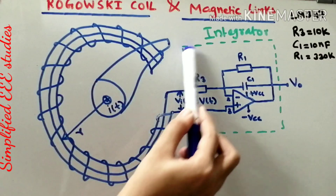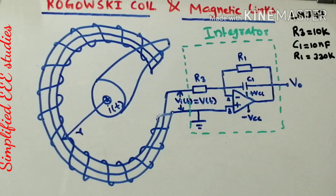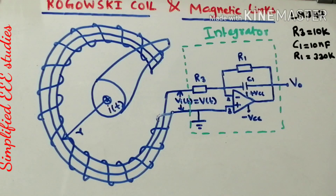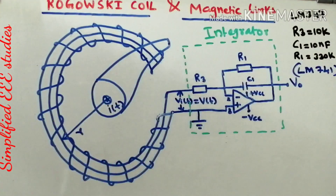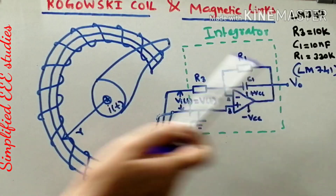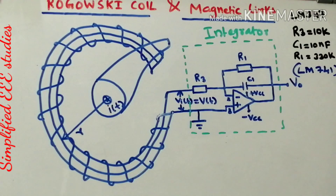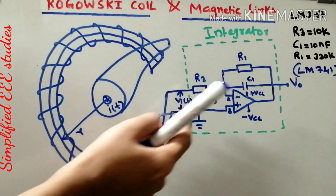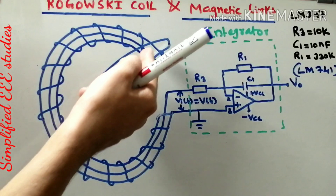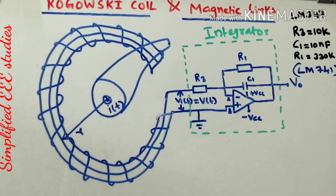The output of the Rogowski coil is connected to an integrator. You can design an integrator using a linear integrator circuit — for example, using an op-amp such as LM347 or 741 IC. By choosing suitable component values, for example R3 = 10kΩ, C1 = 10nF, and R1 = 330kΩ, you can design the integrator to collect the total output across the meter.